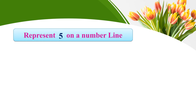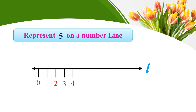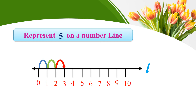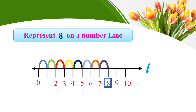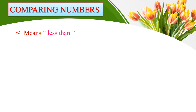Represent 5 on a number line — that is the answer. Then represent 8 on a number line — starting with zero: zero to one, one to two, two to three, three to four, four to five, five to six, six to seven, seven to eight. Now we find the answer — indicate 8 on the number line.